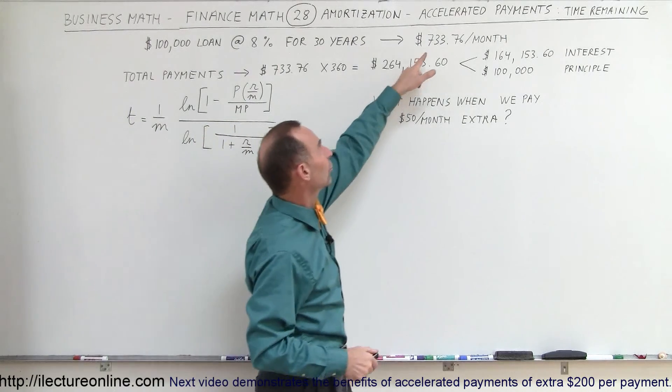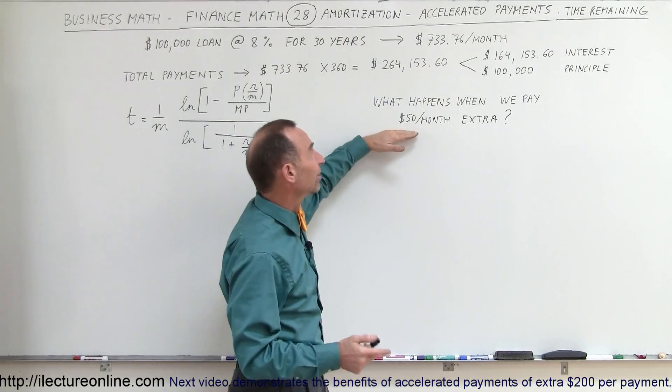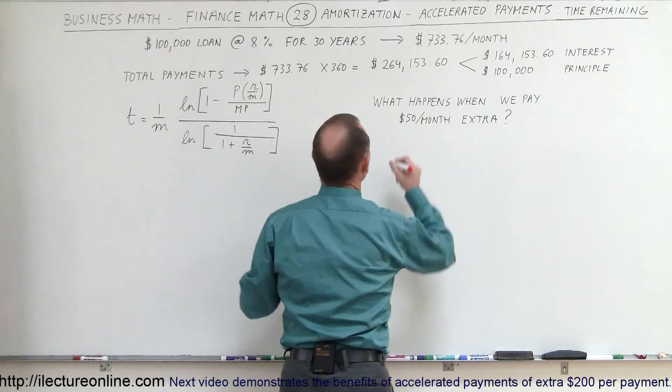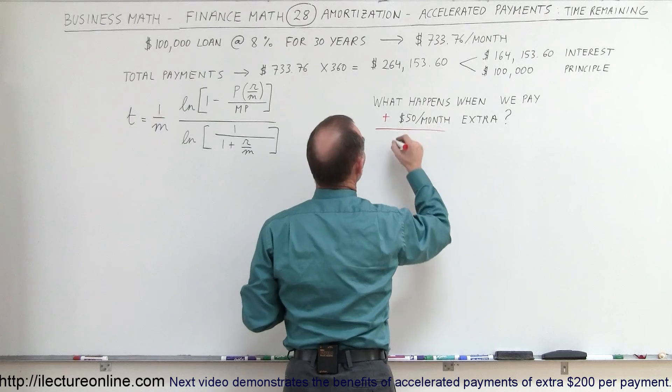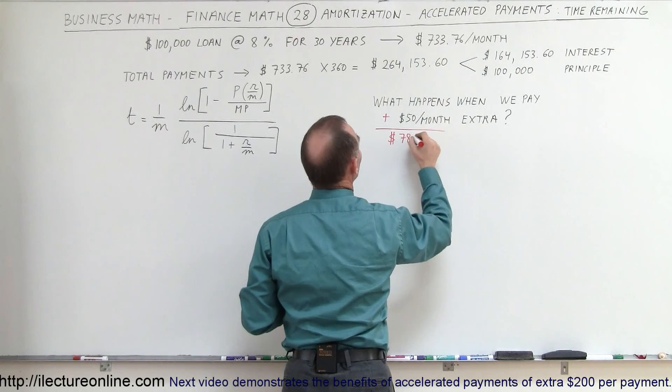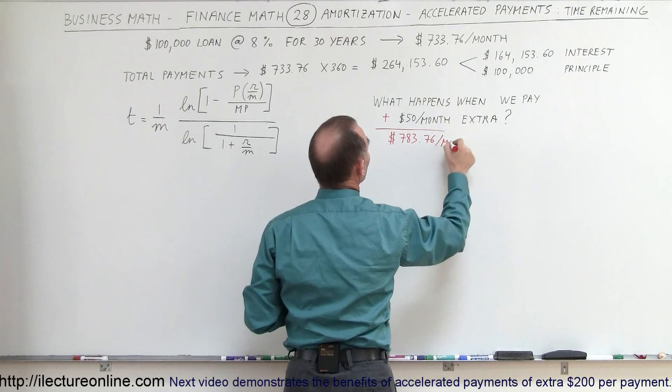So instead of paying $733.76, you're going to pay $783.76. So then the monthly payment, you will now force yourself to pay $783.76 per month.